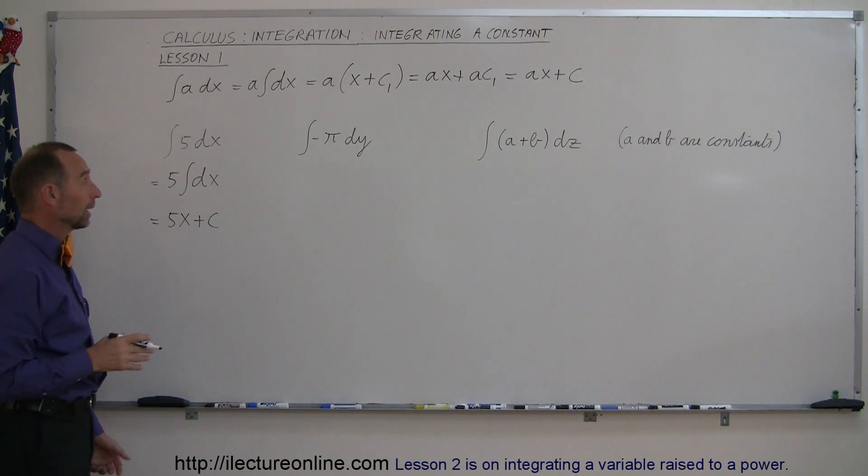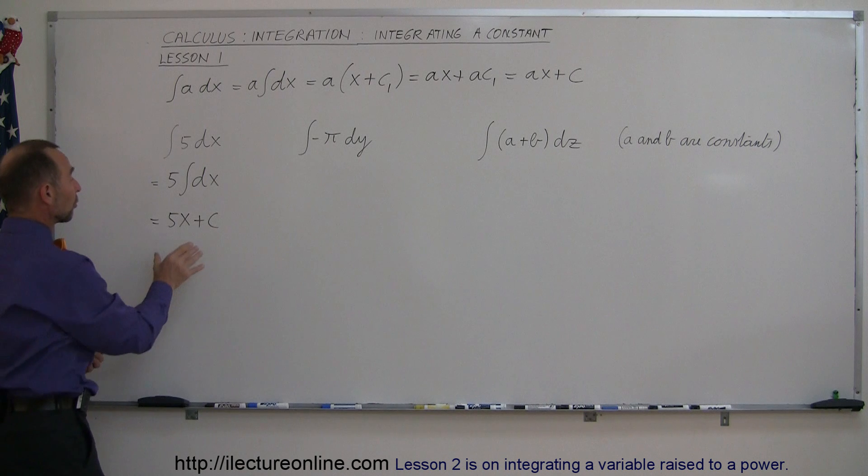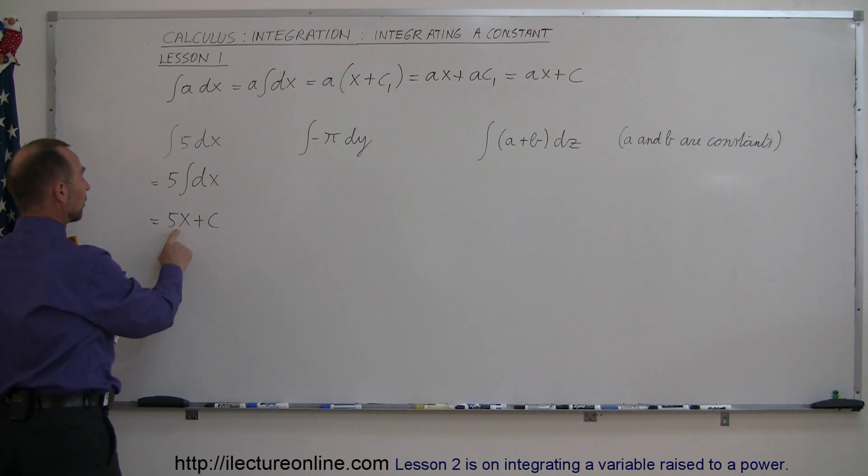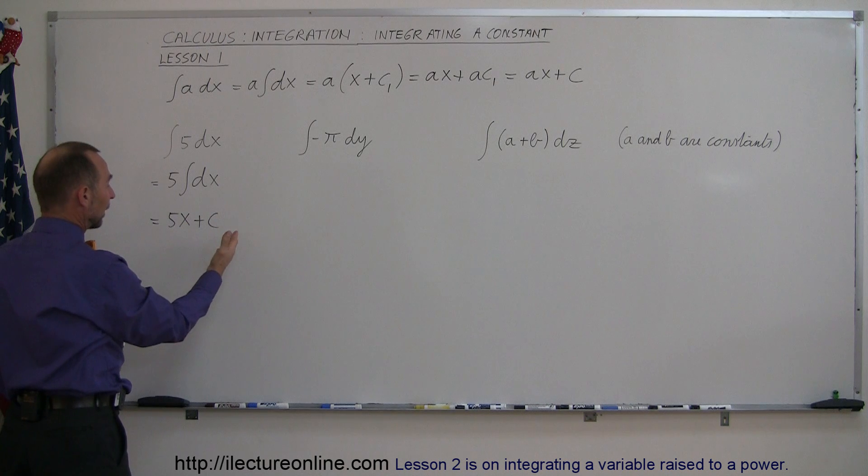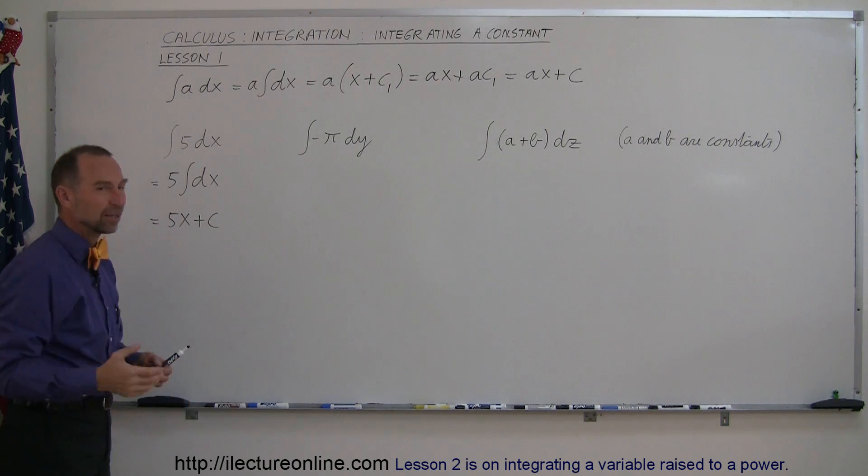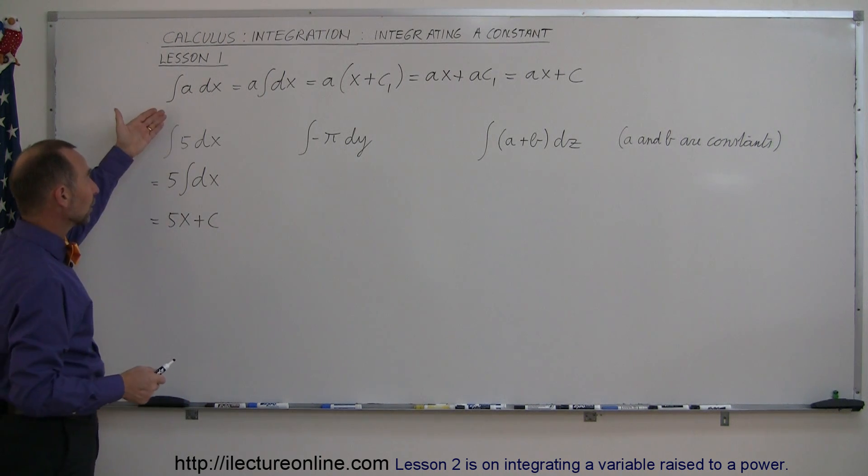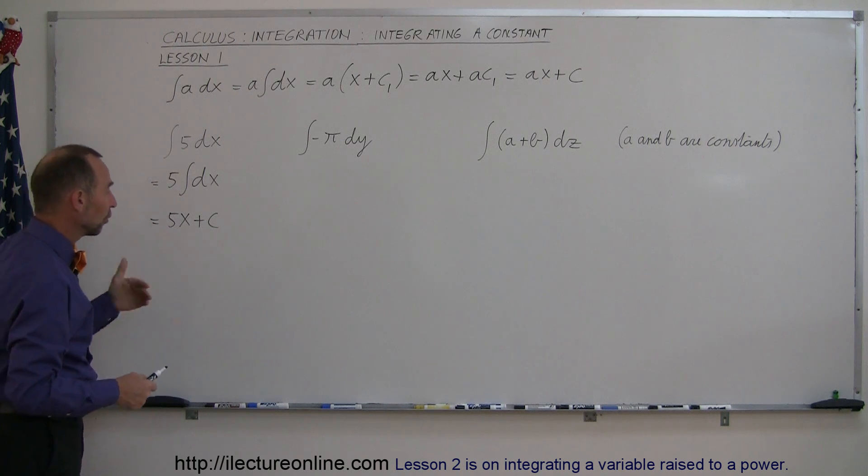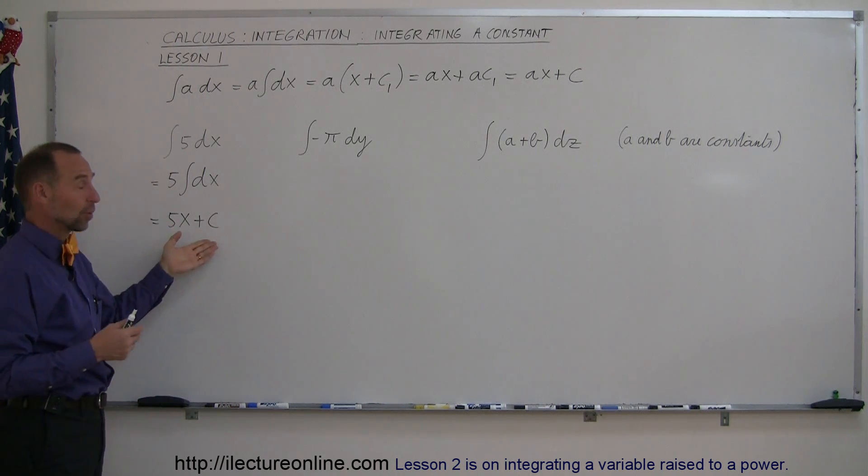Why is that constant there? Well, it turns out if you take the derivative of this, the derivative of 5x gives you 5 and the derivative of c gives you 0. So the constant disappears when you take the derivative. Integrating is what they call the anti-derivative. So when you don't know what the value of the constant was when you took the derivative,